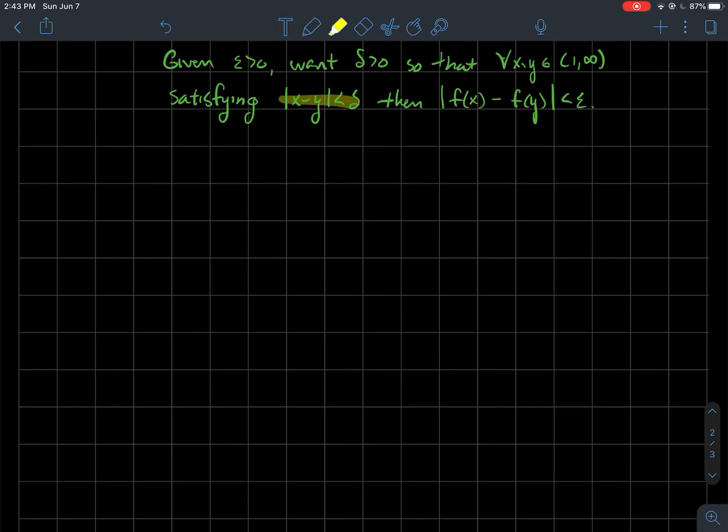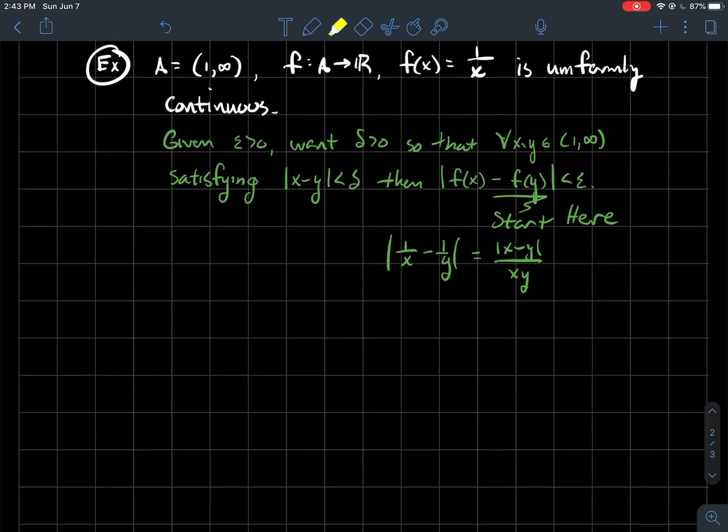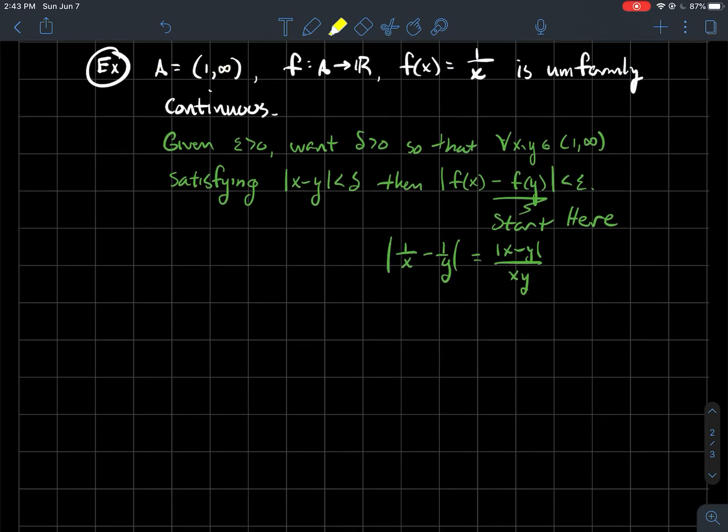And so if I start there in the green, f of x minus f of y is less than epsilon. What is f of x? You take the reciprocal of your input. So 1 over x minus 1 over y. And let's start playing with that. So if you get a common denominator, it should be the same thing as the absolute value of x minus y over xy. And now I want to start thinking about, where do my x's and my y's actually live? Like, what's my domain? Why does the domain matter? Well, if x and y come from 1 to infinity, then I know that x and y are at least 1. But now let's think about this fraction here.